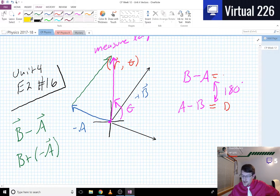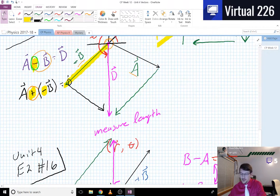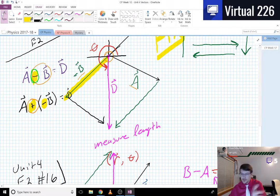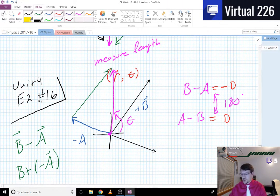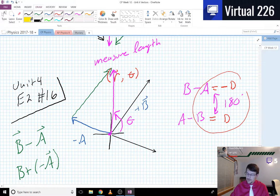...this is technically vector negative D. So if vector D was pointing straight down, or pretty close, this vector is pointing up, so they're off by 180 degrees there, whenever you do something like that.